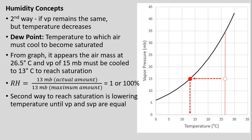Continuing to cool the air along this path, we can trace on the graph that our air mass starting at 26.5°C with a vapor pressure of 15 millibars must be cooled to about 13°C to reach saturation — where our vapor pressure line meets the saturation vapor pressure curve. This is tied to the weather term dew point: the temperature to which air must be cooled to become saturated, given the amount of water vapor already present.